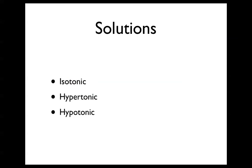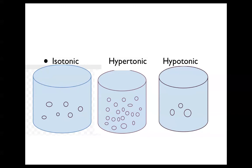You can classify all solutions into three types based on concentration: first, isotonic; second, hypertonic; and third, hypotonic. This is a brief picture of all three solutions. As you can see, the isotonic solution has the same amount of water and solute. Hypertonic has more solute and less water. Hypotonic has less solute and more water.